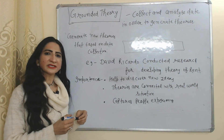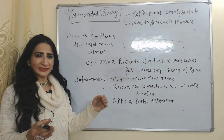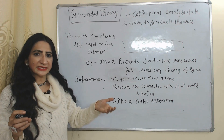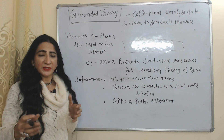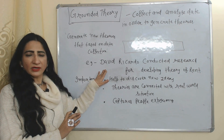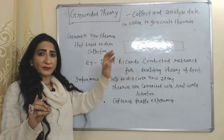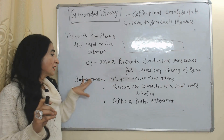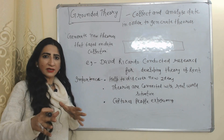Next is grounded theory. Under grounded theory we collect and analyze data in order to generate theories. The main objective of grounded theory is to develop new theories based on data collection. For example, David Ricardo conducted research to develop his rent theory — meaning Ricardo's rent theory is based on the data collected by him. The importance of grounded theory is that it helps discover new ideas, theories are connected with real-world situations, and it captures people's experiences.